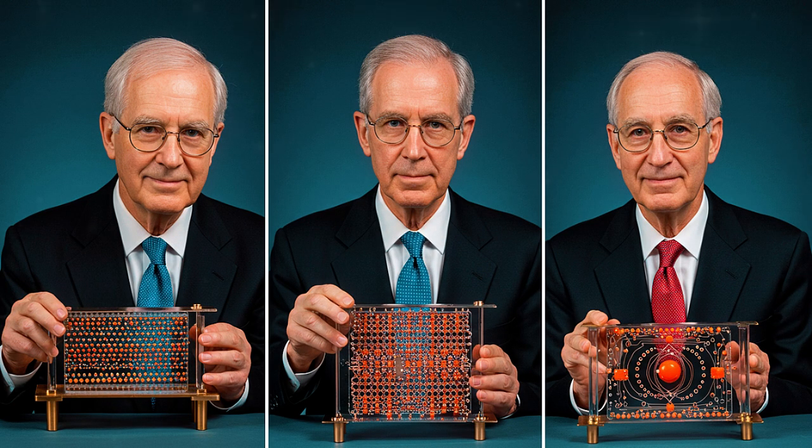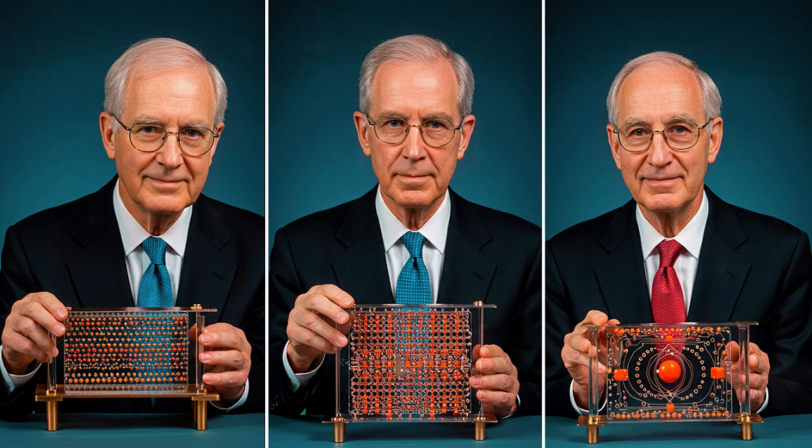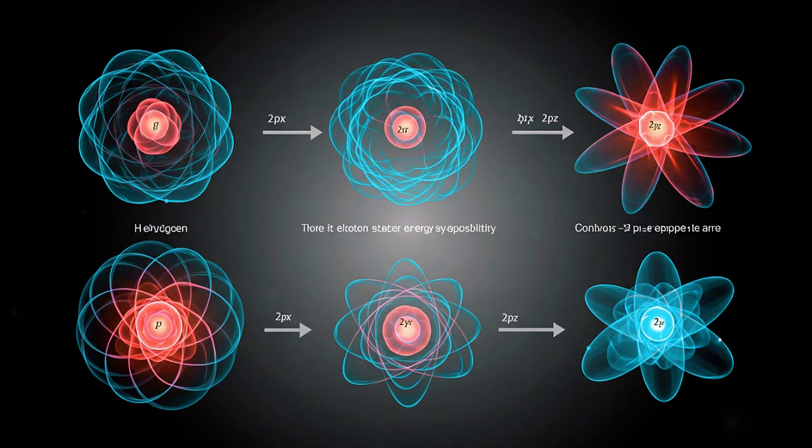Researchers harness this peculiar quantum effect to extract electrons from atoms without providing them the complete energy required to overcome the barrier. Here's their methodology. They generate a powerful electric field on one side of the atom. Typically, the nucleus occupies the center, while the electron's probability cloud distributes uniformly around it.